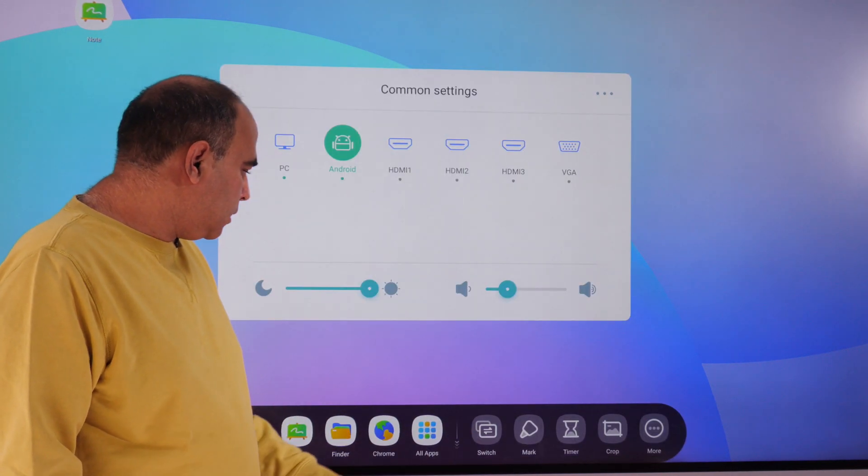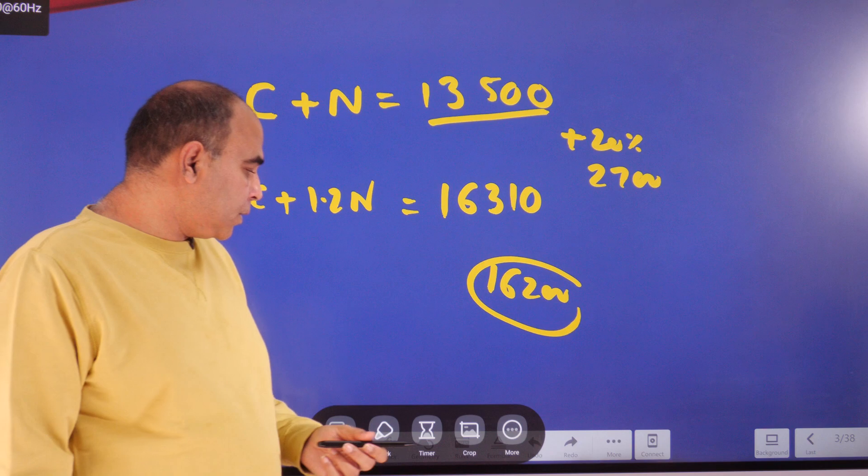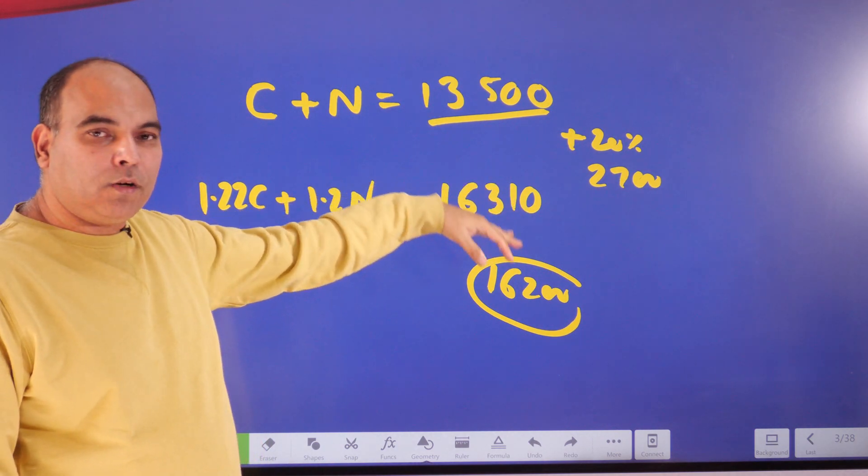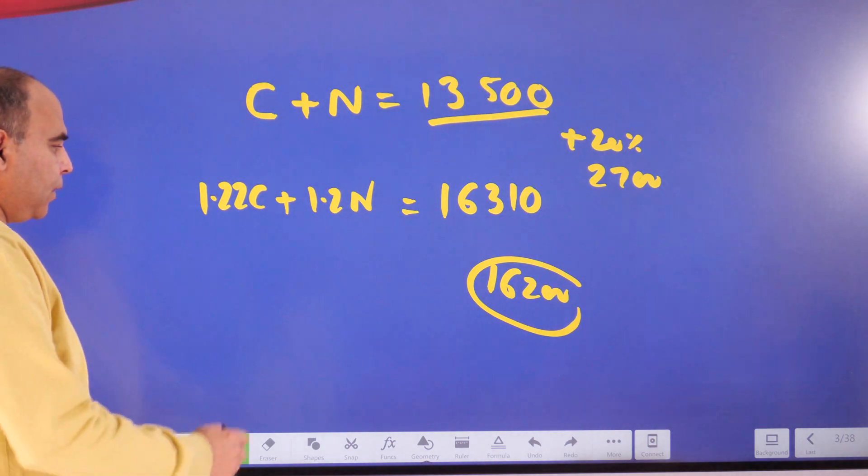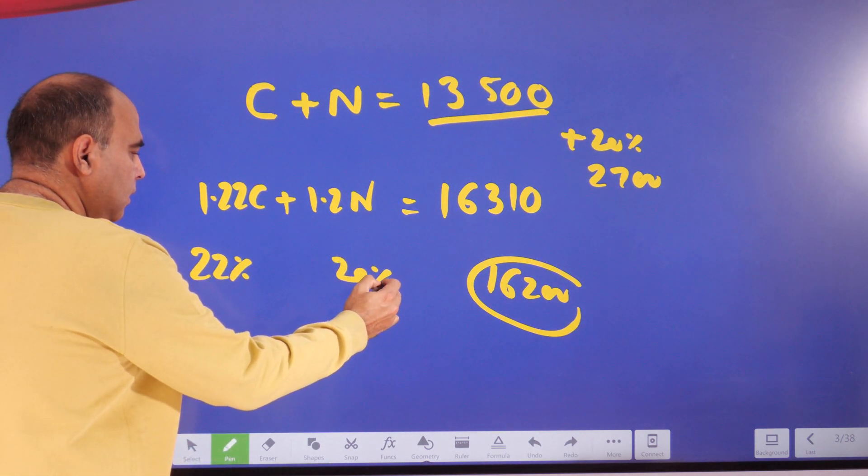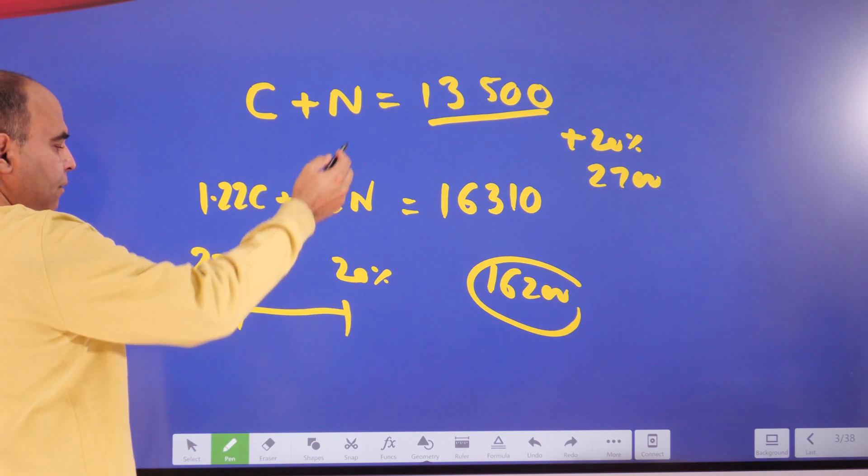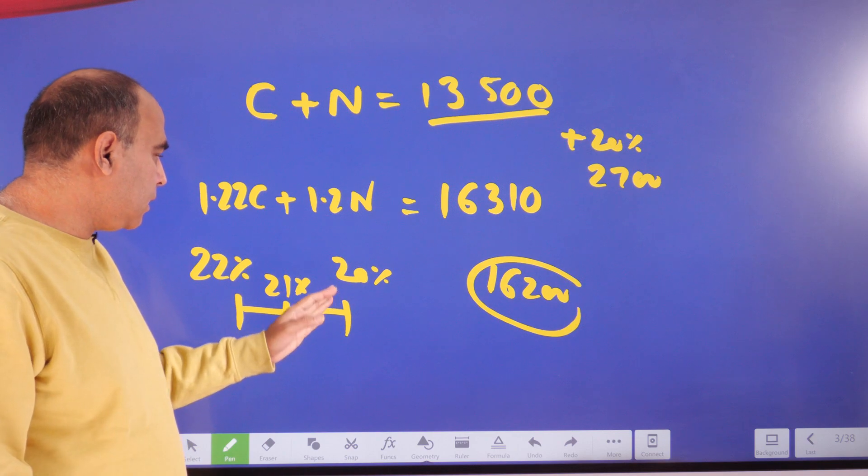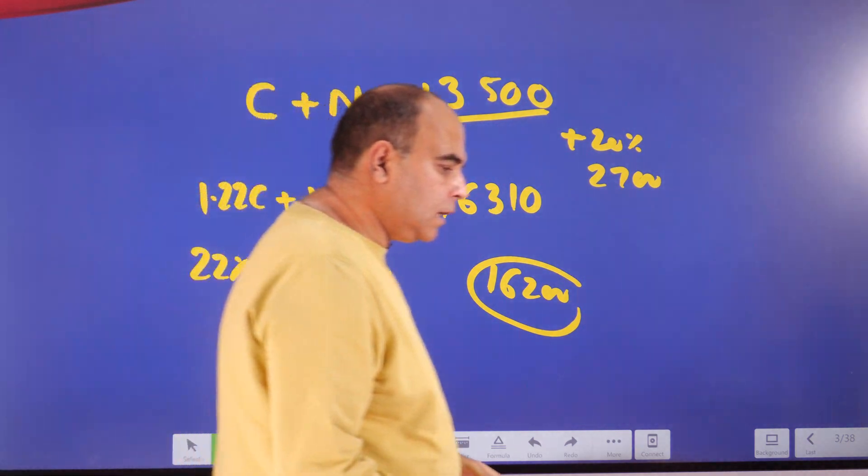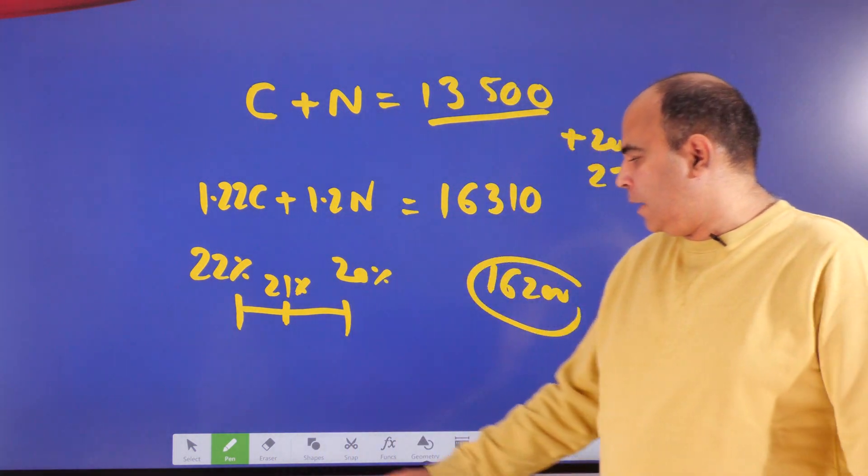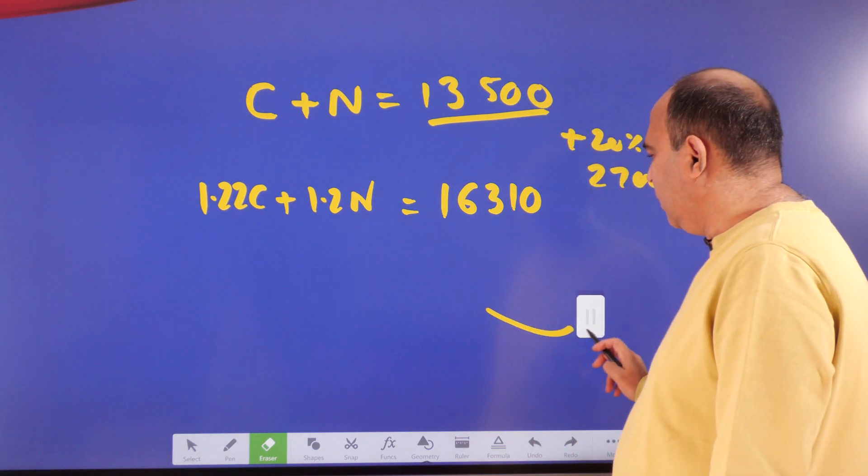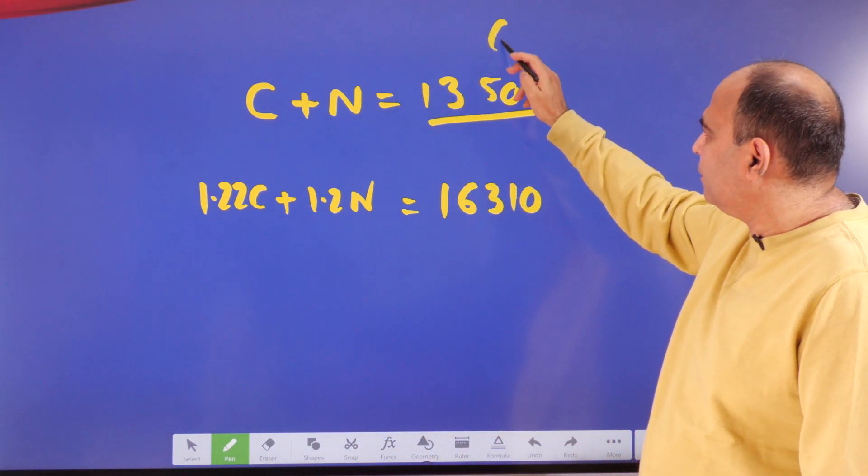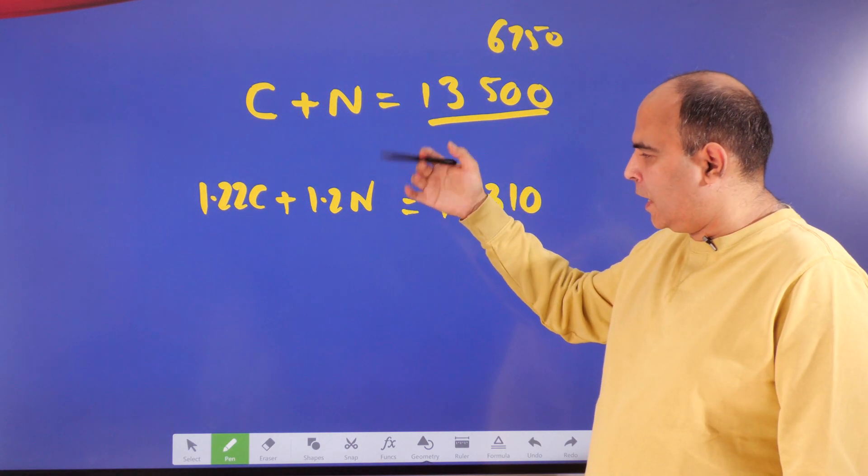Because 135 more from here would have been exactly 21% growth, so 16,335 would have been 21%. This number is below 16,335, so that means the growth is less than 21%, which means if the growth is less than 21%—this is growing by 22%, this is growing by 20%—if the values of C and N were equal, then the growth would have been 21% exactly. If the growth is less than 21%, that means the value of N is more than half.